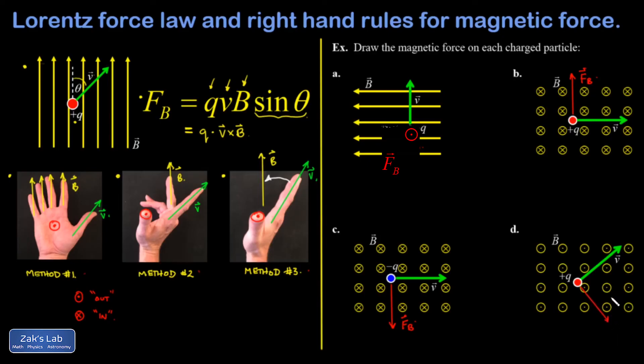Now again, the right hand rules, they give you pretty much the right direction, but you're not going to orient your hand perfectly. You can perfect your answer by remembering that the magnetic force is always going to be perpendicular to the velocity vector and to the magnetic field lines.